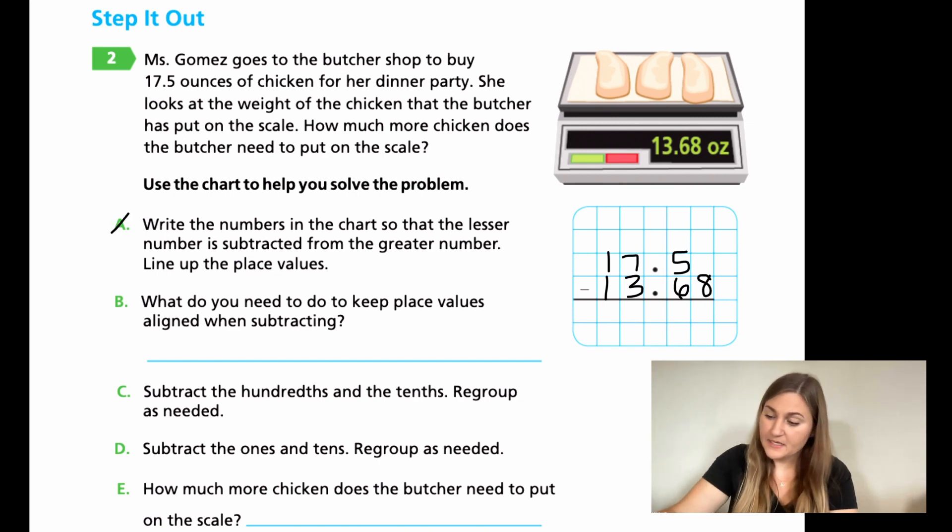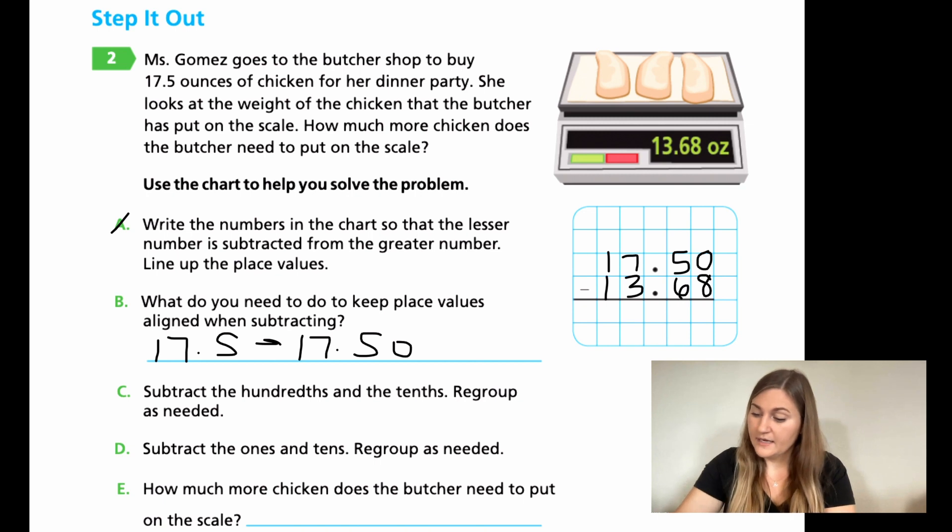Alright, and then for B, it says, what do you need to do to keep the place values aligned when subtracting? Well, if you notice, there's nothing above the 8. So what I'm going to do is I'm going to put a 0 right next to that 5. So right here, I'm just going to write 17.5 needs to become 17.50. Those are equivalent. They're equal. I'm just adding a 0.